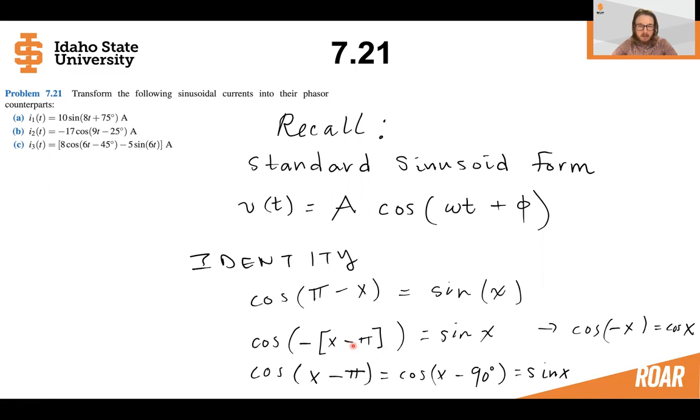And we know also from an identity that the sine of x is related to cosine minus 90 degrees. So we have a relationship so that we could go between cosine and sine so that we could find a standard form.